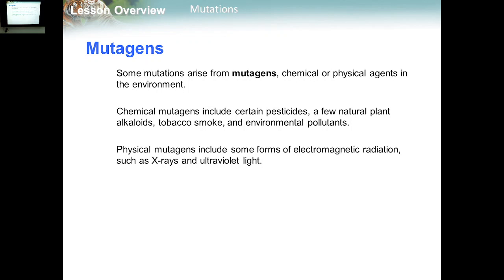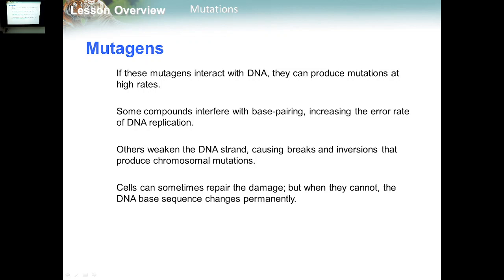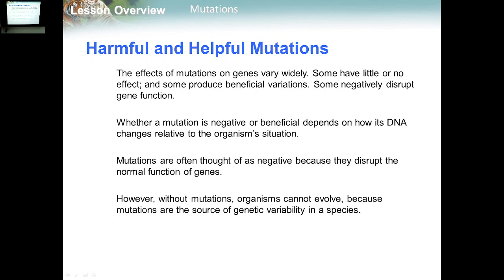Physical mutagens include electromagnetic radiation such as X-rays and UV light. When these mutagens interact with DNA, they can produce mutations at high rates. Some compounds interfere with base pairing, increasing the error rate of DNA replication. Others weaken the DNA strand, causing breaks and inversions that produce chromosomal mutations. Cells can sometimes repair the damage, but when they cannot, the DNA base sequence changes permanently and harms the cells.